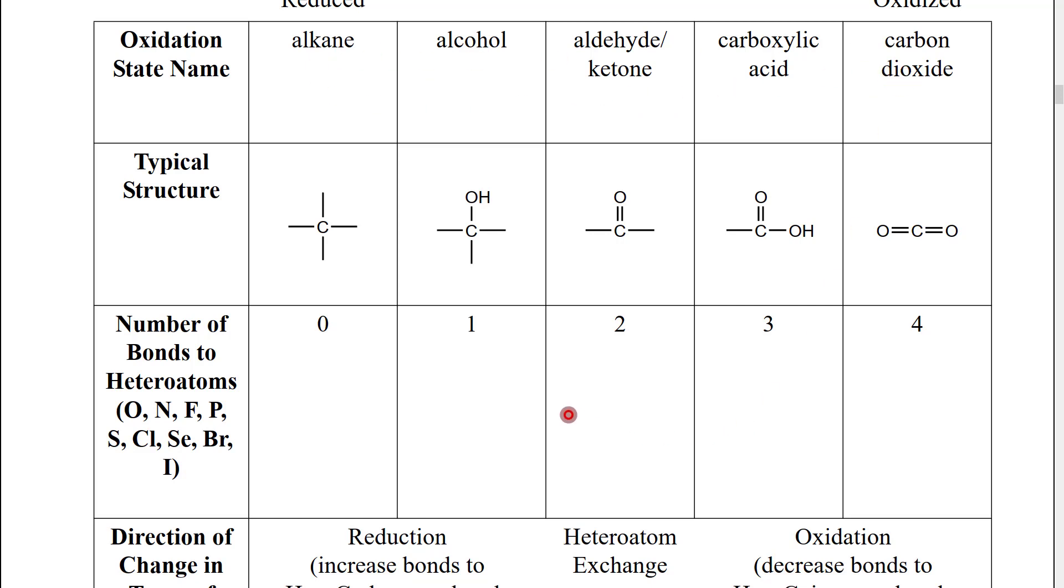The next thing to notice is that if we do a reaction that moves us from one oxidation state to another, we can categorize that using redox language. So, for example, if we start over here at the alkane oxidation state and we make an alcohol or we make an alkyl chloride, we would be increasing the oxidation state of the carbon. That would be considered an oxidation reaction. So, reactions that move in this direction are oxidations. Similarly, we're going to see very shortly reactions that start with a ketone and end with an alcohol. In that case, we would have done a reduction.